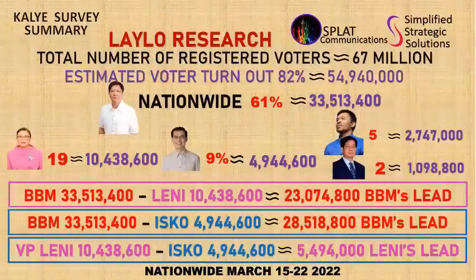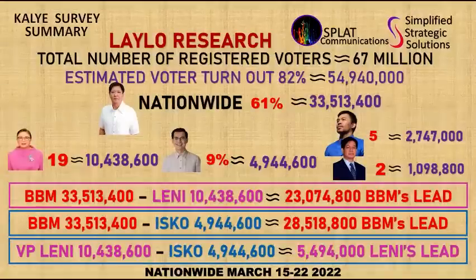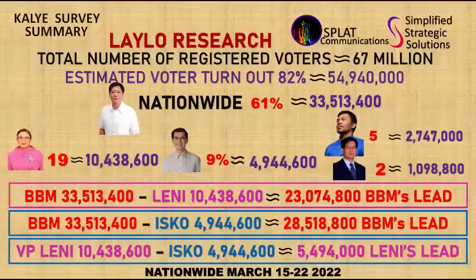Let us now look at the quantification of survey data based on the latest Lalo Research Survey with fieldwork March 15–22, 2022. There are approximately 67 million registered voters nationwide as per COMELEC data. Assuming a voter turnout of 82% based on the previous election, this translates to about 54,940,000 votes.